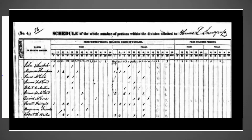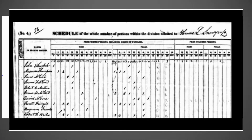But all four years of mortality schedules give the names, ages, sex, color, marital status (either married or widowed), birthplace, month of death, occupation, and disease or cause of death. This could be a real help when you're trying to fill in gaps in your family tree.